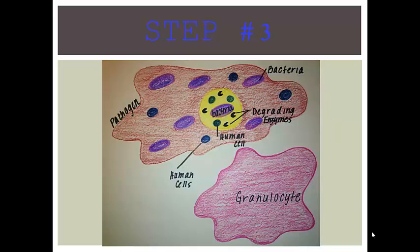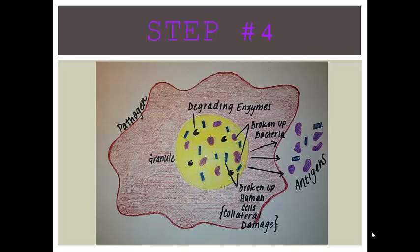Step 3, the degrading enzymes break up the bacteria, thus destroying the pathogen. However, during this process, some of your own cells get destroyed as well by the degrading enzymes, which results in something called collateral damage. In step 4, antigens are produced by the bits and pieces of destroyed bacteria and also the destroyed pieces of your own cells.